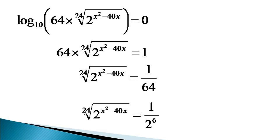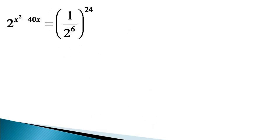Now we take the 24th power of both sides to remove the root sign. By taking the 24th power of both sides, the expression becomes 2 raised to the power x squared minus 40x is equal to 1 by 2 raised to the power 6, whole raised to the power 24, which gives 2 raised to the power x squared minus 40x equals 1 by 2 raised to the power 6 times 24.